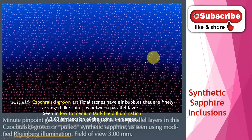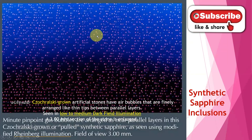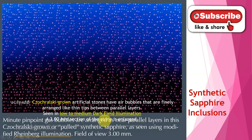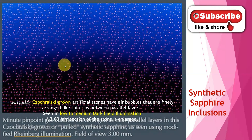All are air bubbles, finely arranged like thin tips. We can see the parallel layers — so many layers are there, thin tips, layers with thin tips. You can see this is the symbol we have to identify for Czochralski grown artificial stone. This 3 millimeter section is enlarged. The illumination method here is low to medium dark field illumination — I will explain it later. That means rainbow illumination; both are the same. It is synthetic.